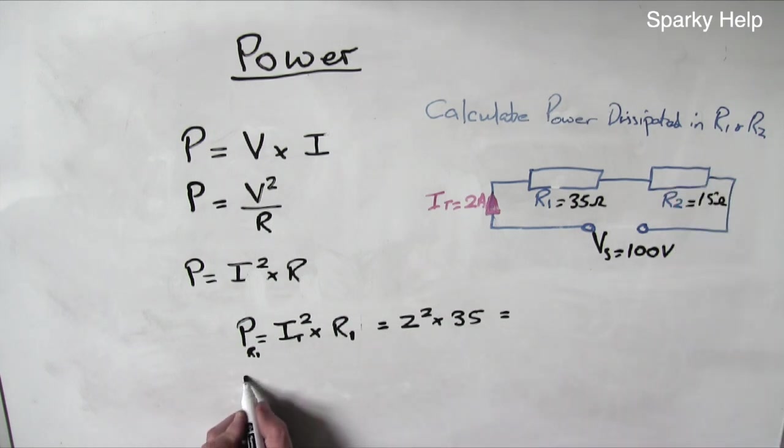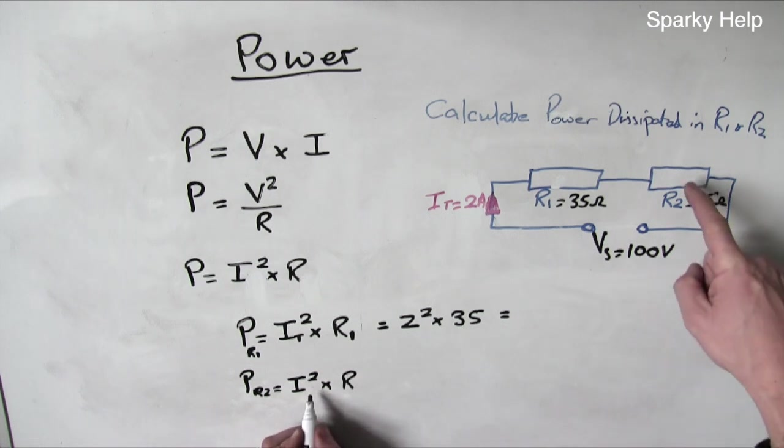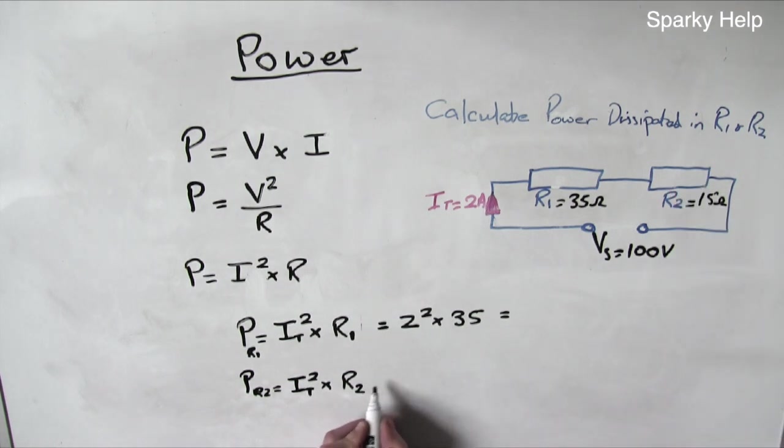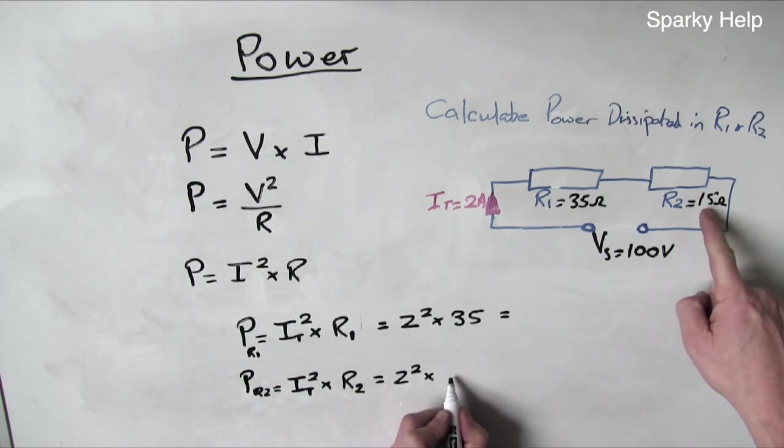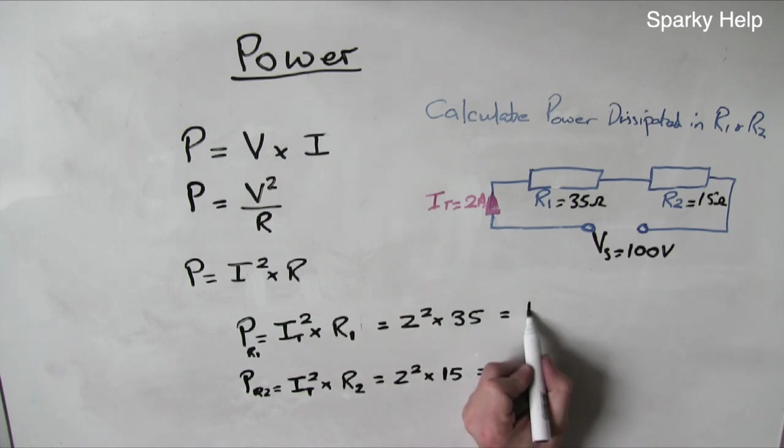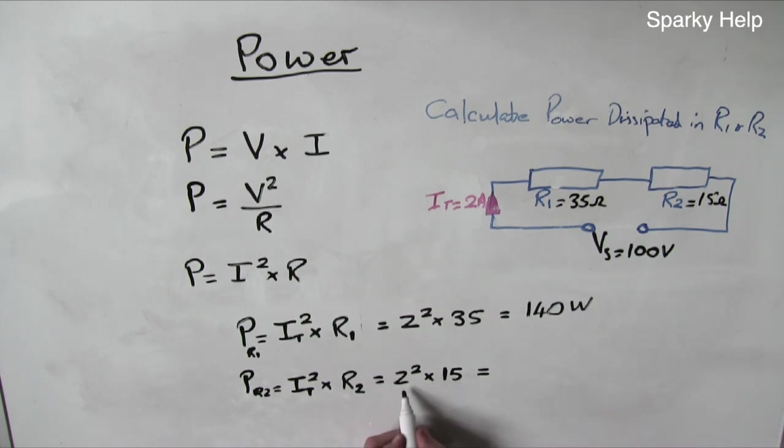To find the power in R2, I'm going to use the same formula again. I² times R. So it will be the current that passes through that resistor. So because it's series, it has to be IT times R2. Putting those figures in, 2² times 15. So if we do these two calculations, 2² times 35, 140 watts. 2² times 15, 60 watts.